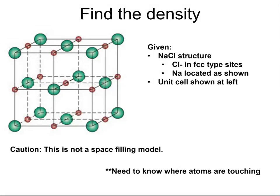Let's take a look at finding the density of the ceramic. The main difference here between that and the metals is now we're going to keep track of different types of ions when we're looking at the unit cell.